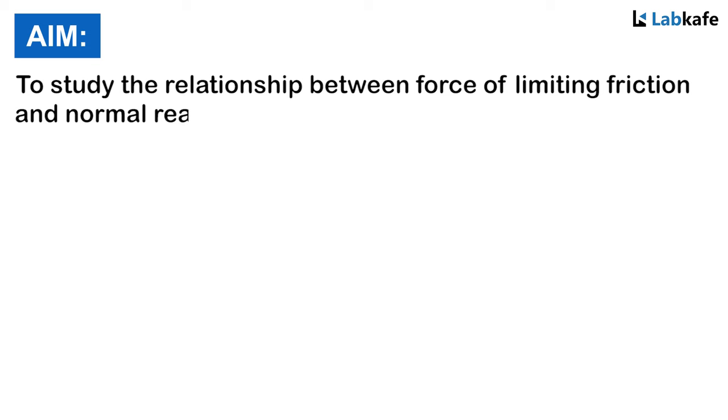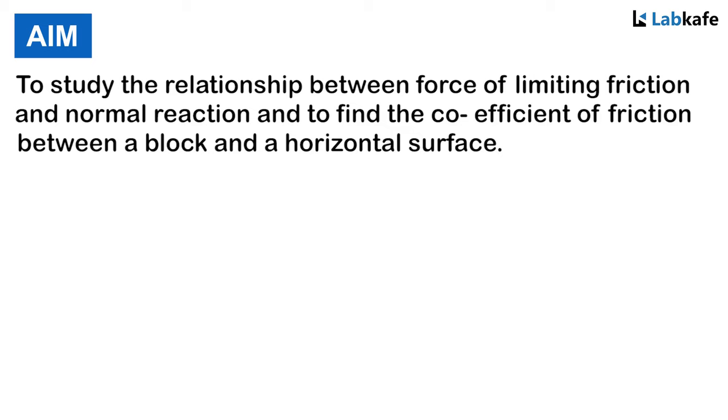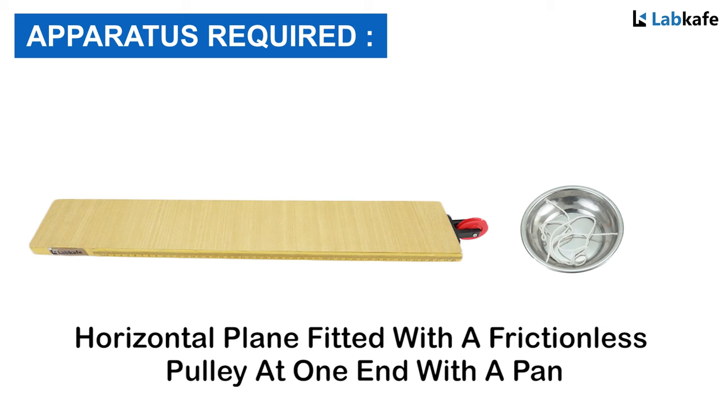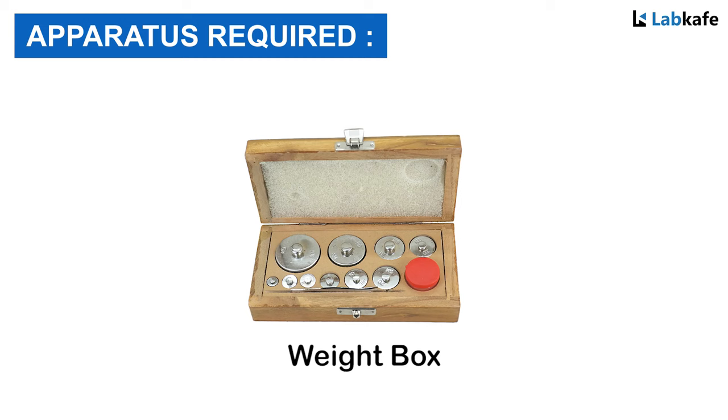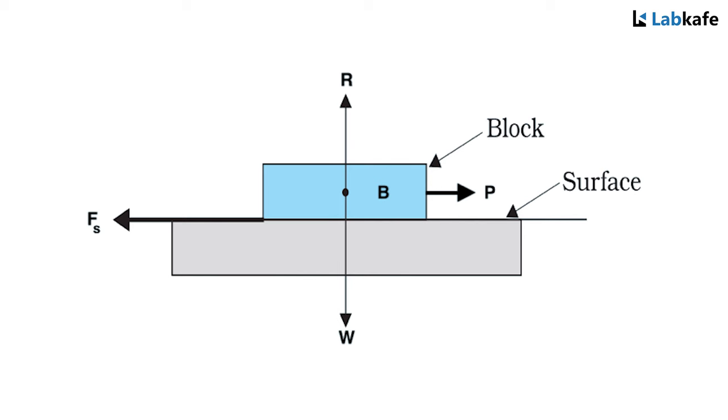The aim of the experiment is to study the relationship between force of limiting friction and normal reaction, and to find the coefficient of friction between a block and horizontal surface. Apparatus required: a horizontal plane fitted with a frictionless pulley at one end with a pan, a wooden block with hook, a spring balance, a weight box with several 50 gram weights, cotton thread, graph paper, pencil, and a ruler.